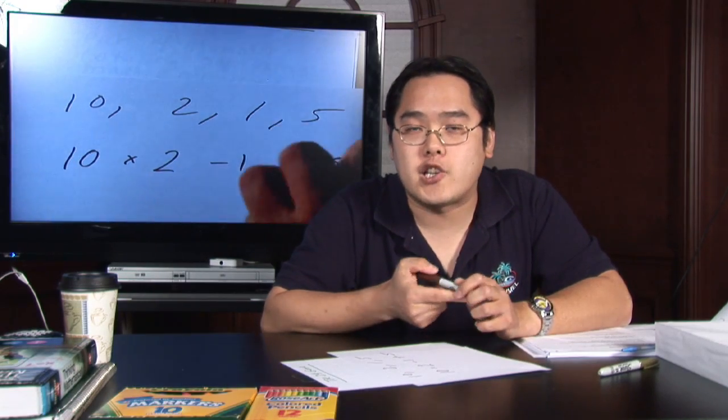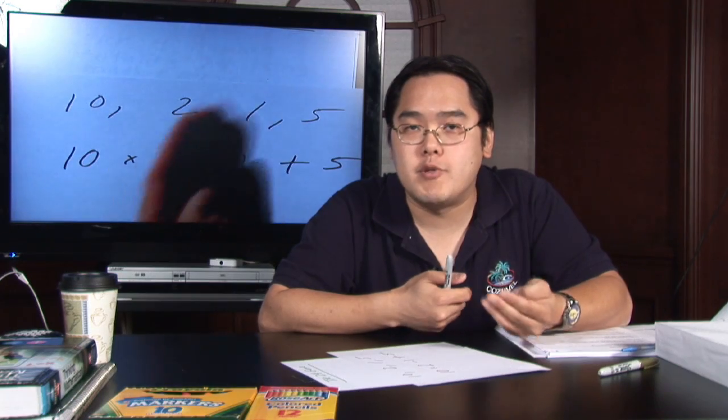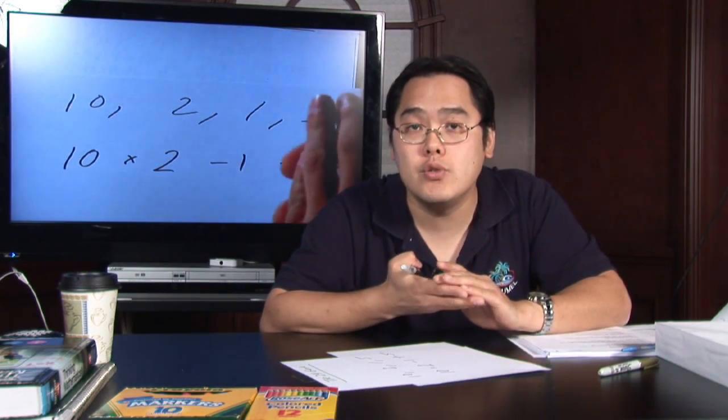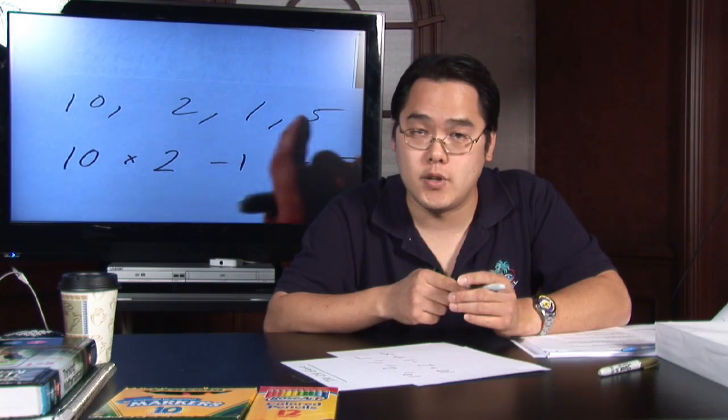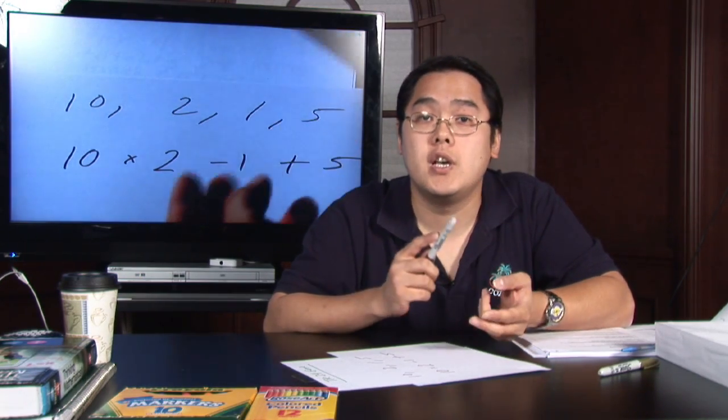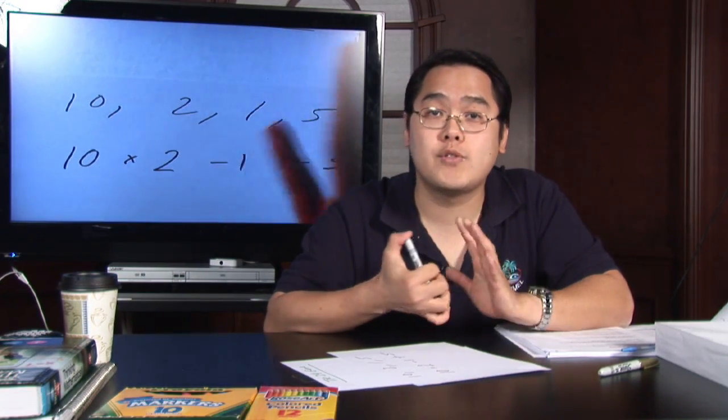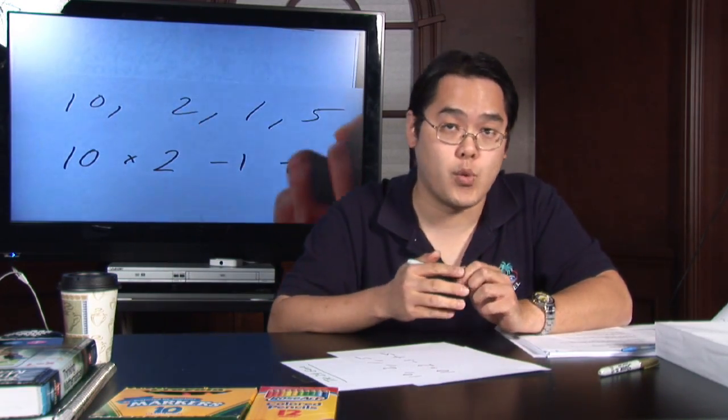The 24 game is actually a numbers game in which you pick four numbers and the objective is to figure out what math operations can you use so that those four numbers will give you 24. Now the operations are addition, subtraction, multiplication, and division and you want to pick three out of those four operations to use those four numbers.